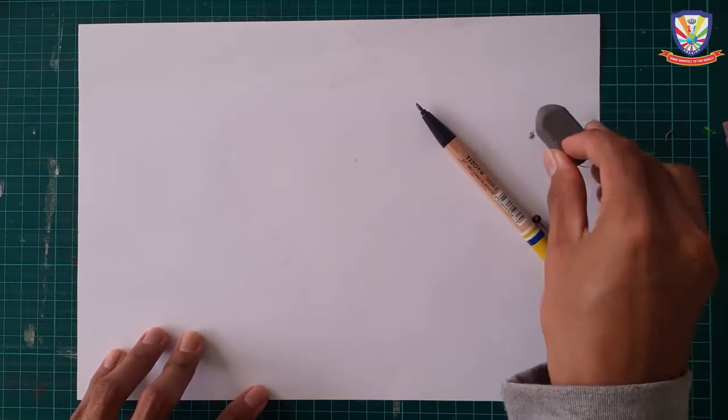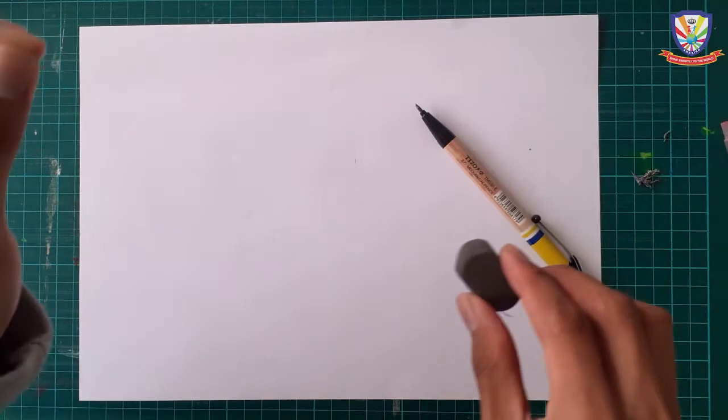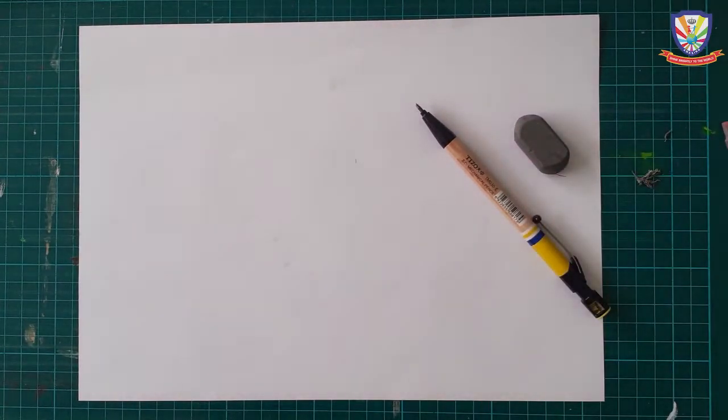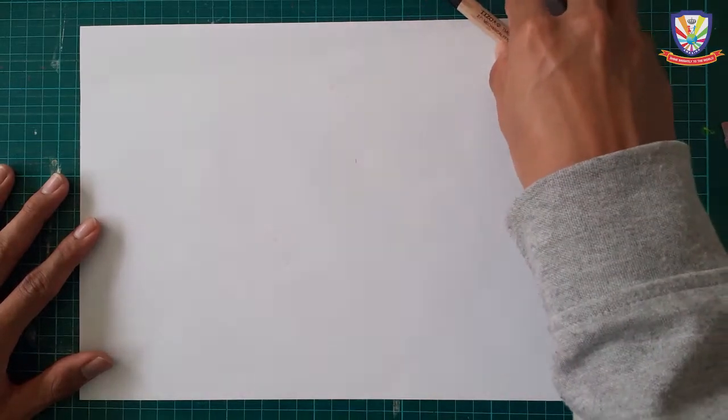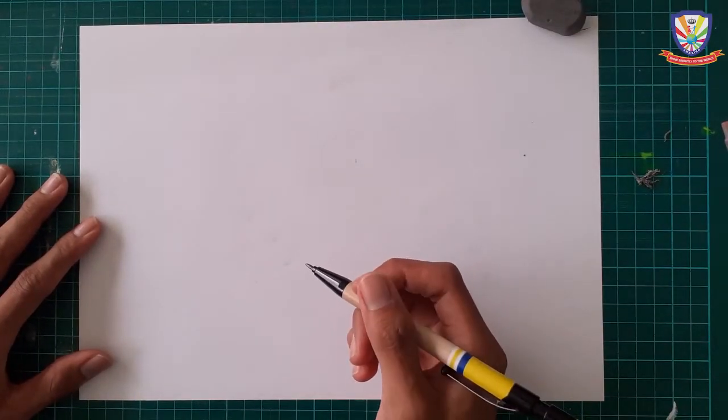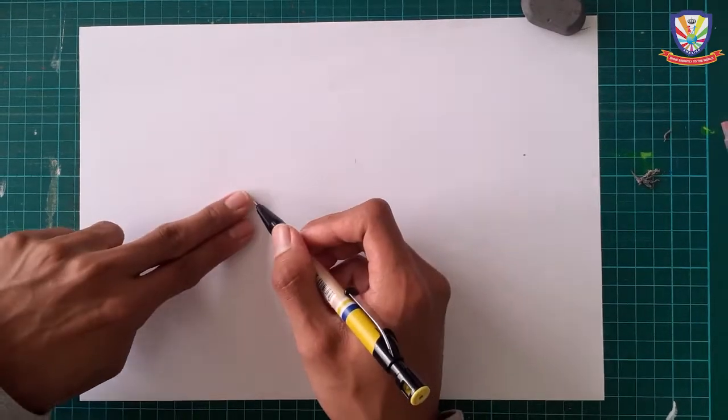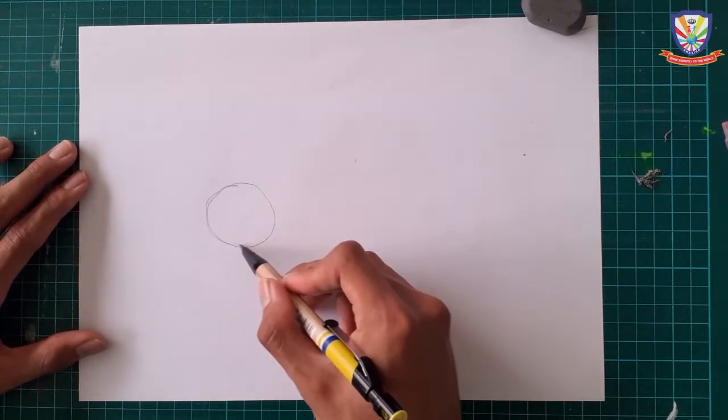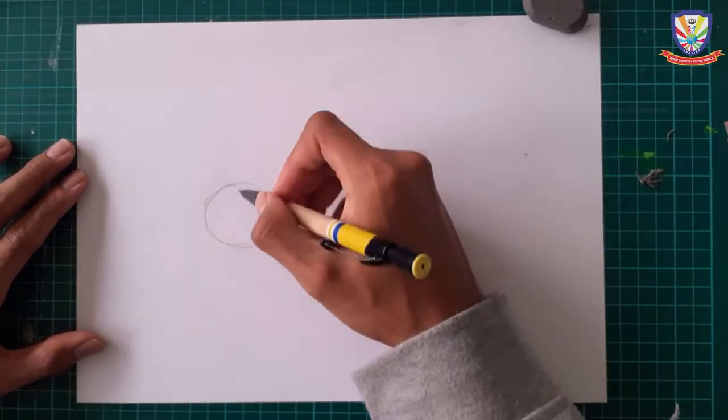Alright, so that's all what we need. Let's get started. To make it faster, first we are going to make a circle. Use two fingers of your hand, just make around here and then just make a circle. We prepare this circle for the head.